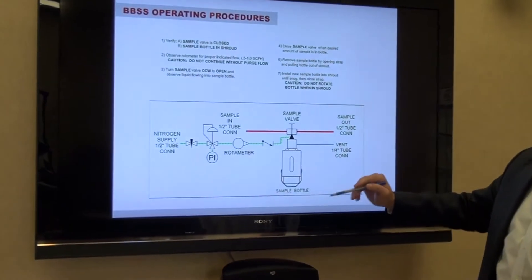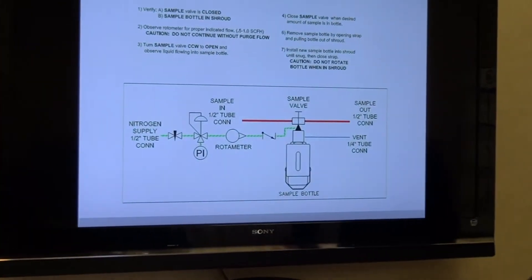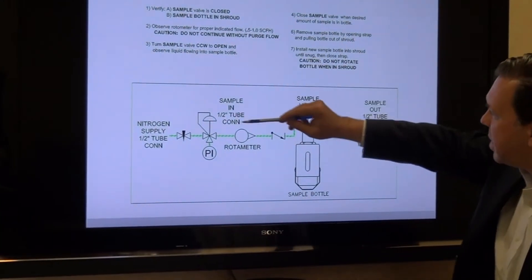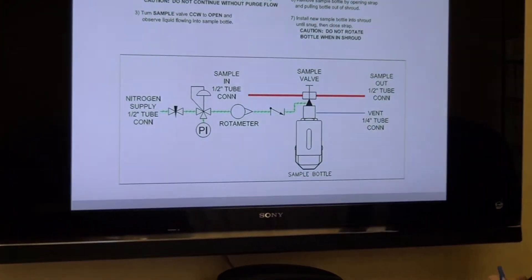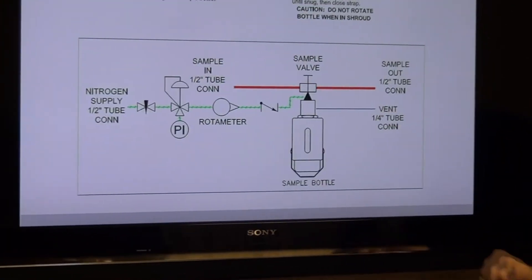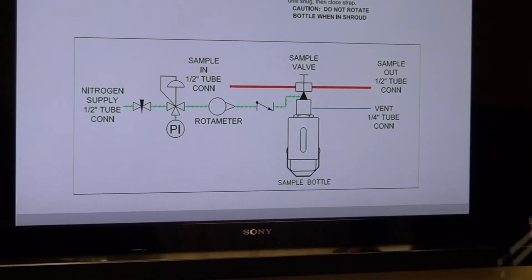So our system is typically going to be set up on a bypass line from the main process line, but we're going to be continuously flowing through the sample valve. We'll take a look and see what that looks like on the panel in a moment, but we're flowing continuously through the sample valve.